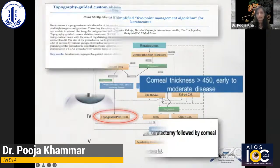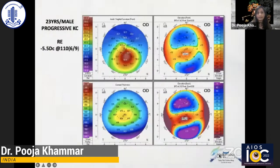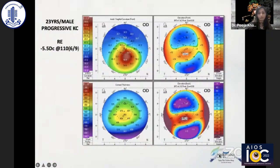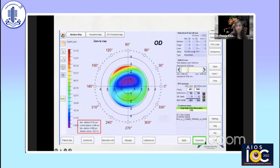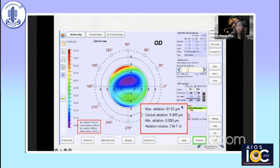Let's look at a case example: this is a moderate keratoconus with a thickness of 450 microns, a cylinder of minus 5.5, and best-corrected visual acuity of 6/9. When we planned a laser-based cross-linking for this patient, the maximum ablation was going above 80 microns. We all know the standalone rule that in any keratoconic eye, ablation should not go beyond 40 to 45 microns — and here it was 81 microns. So what do we do for this moderate keratoconic eye with poor quality of vision?